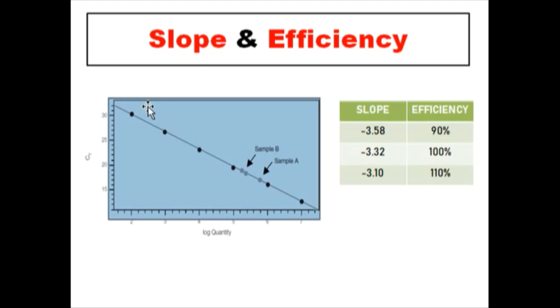Now come to the slope. Slope is the measure of efficiency - from this slope we can understand how accurately the reaction performs. Ideally, efficiency of a PCR reaction should be 100%, meaning the template doubles after each thermal cycle during exponential amplification. For an ideal PCR reaction, the slope value should be minus 3.32.